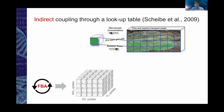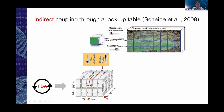With this indirect coupling approach, at every time step for every grid cell, instead of solving FBA, you retrieve the flux constraint and search the lookup table to find the corresponding reaction rate — for example, biomass growth rate. So if the flux constraints are organic carbon uptake, ammonium, and oxygen at specific values, you look up the table to find the reaction rate needed as input to solve the reactive transport equations.